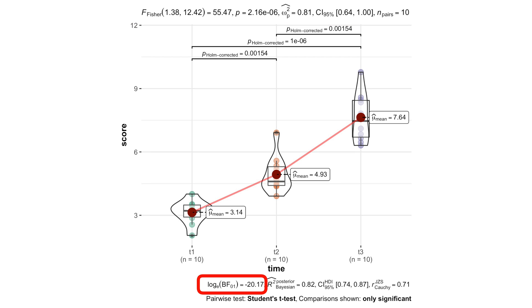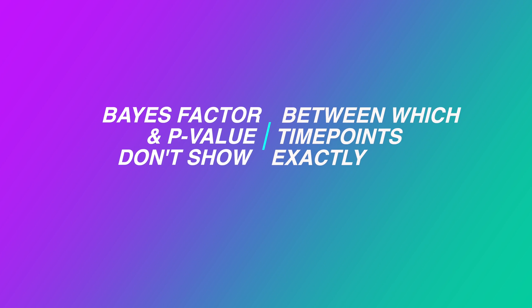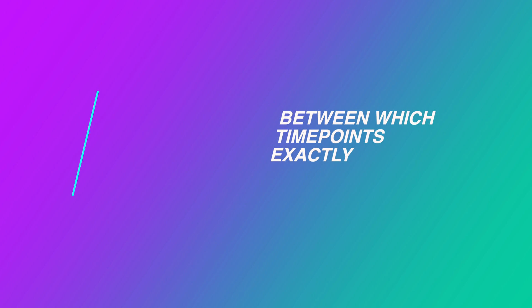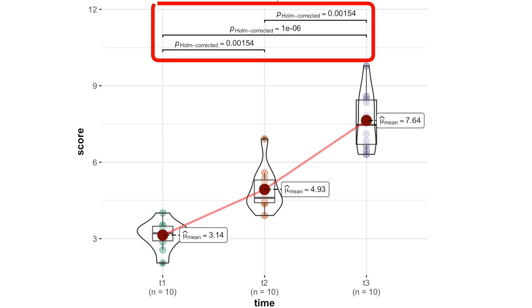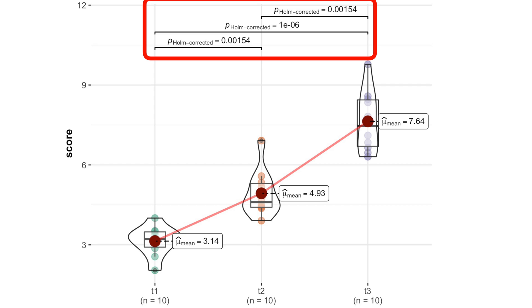Now, both Bayes factor and p-value tell us that differences between time points exist. However, they don't show between which time points exactly. That's why we need to compare every time point to every other time point pairwise.